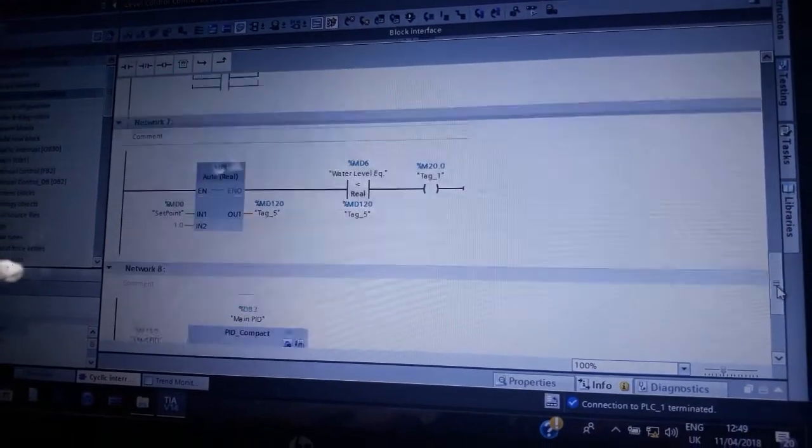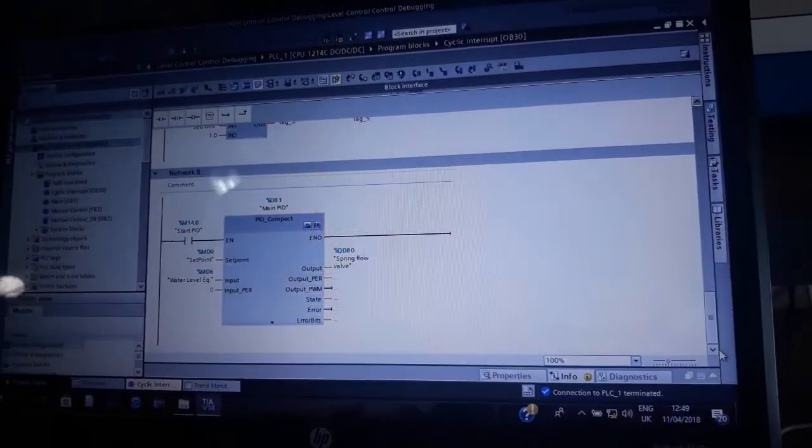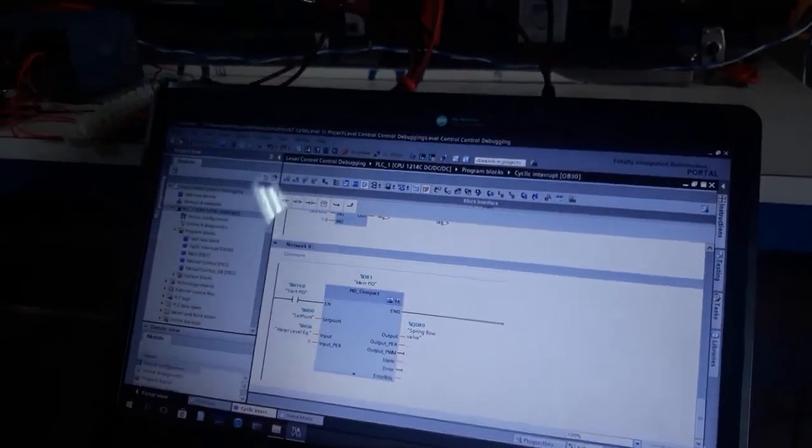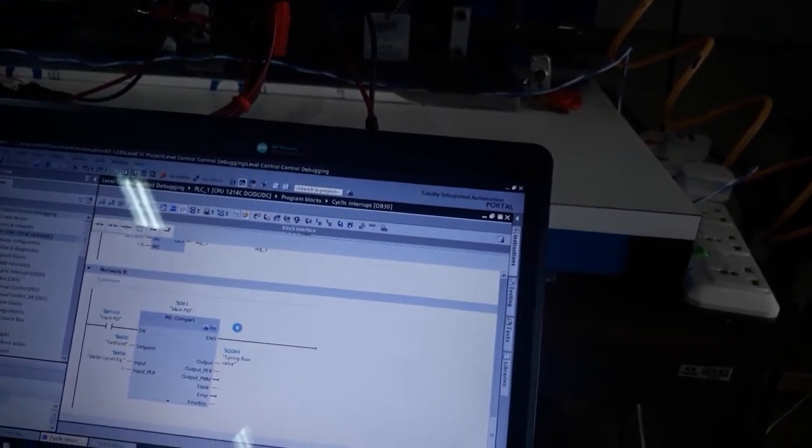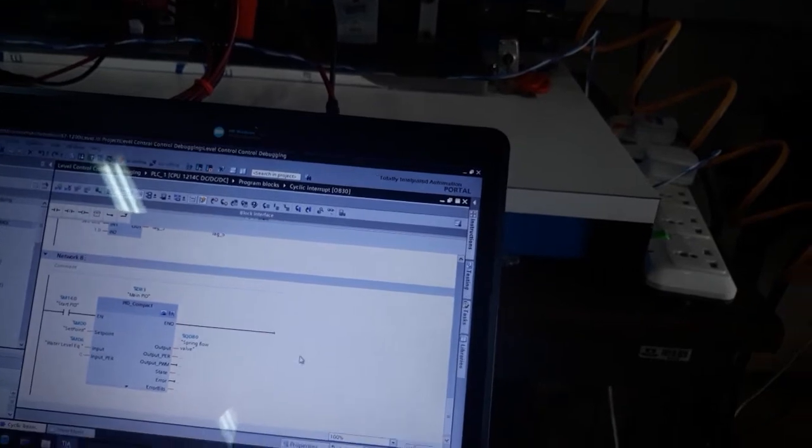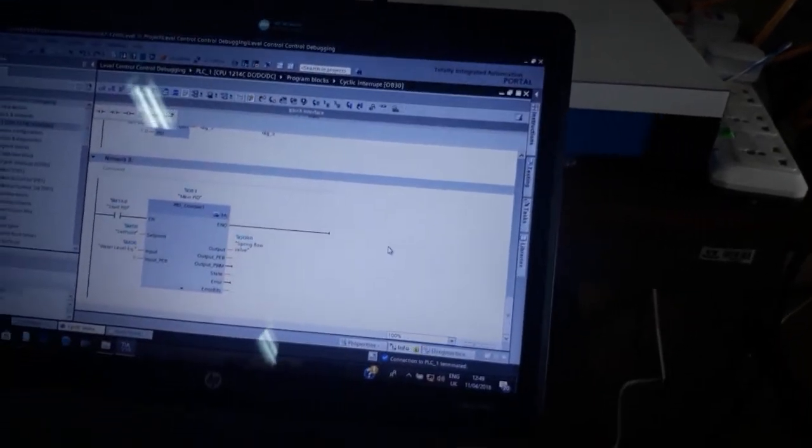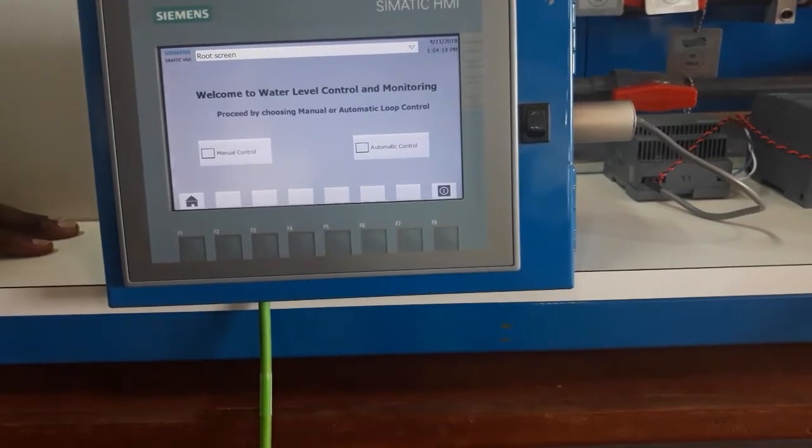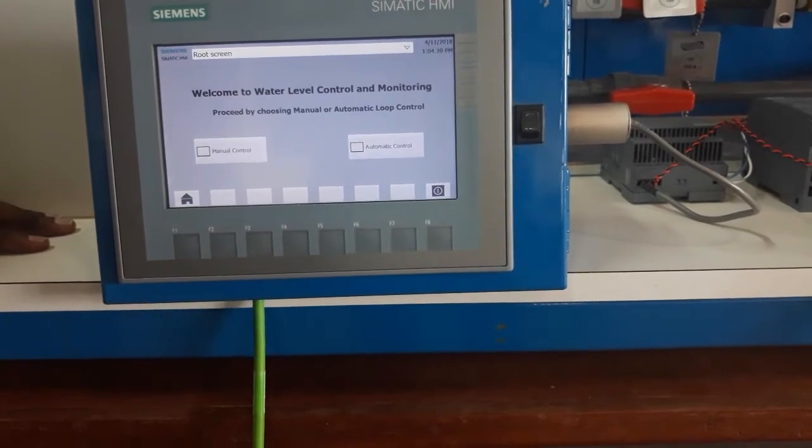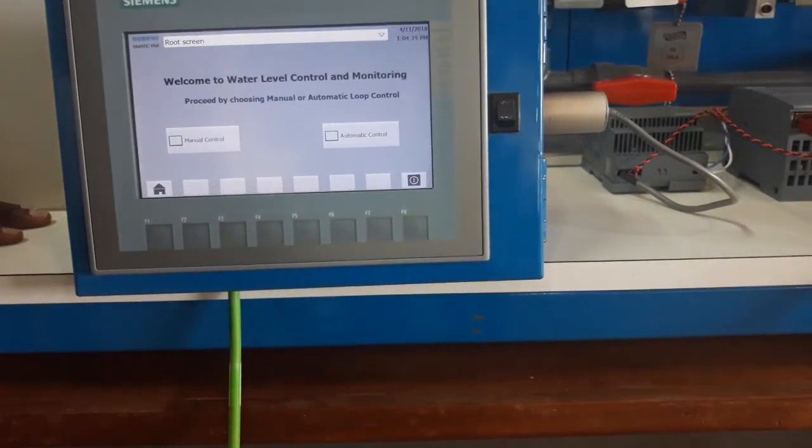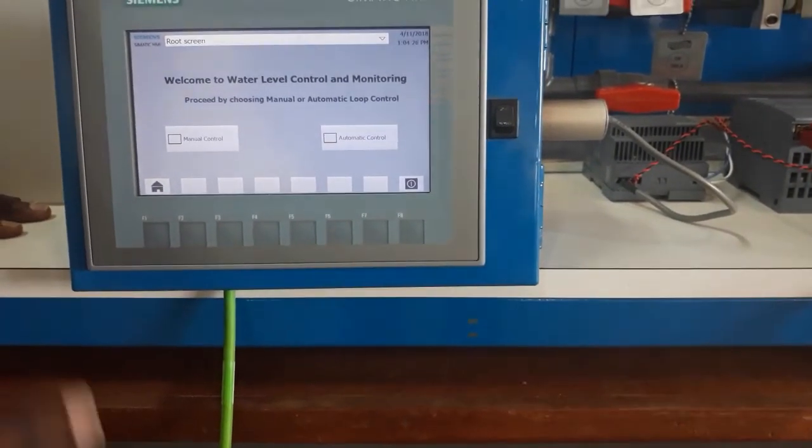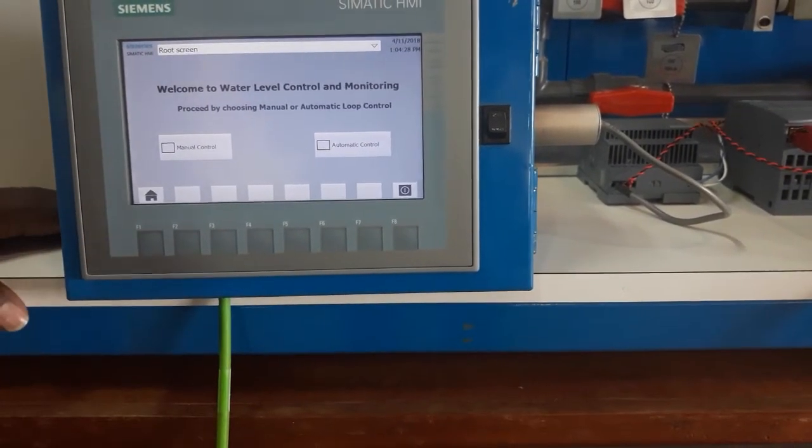So without wasting any more time, I'll go ahead and demonstrate how our system works by starting the CPU, the PLC. After starting the PLC from my laptop, then connecting the PLC with the Simatic HMI through the Ethernet cable, I'll just go straight ahead to demonstrate how our project works.